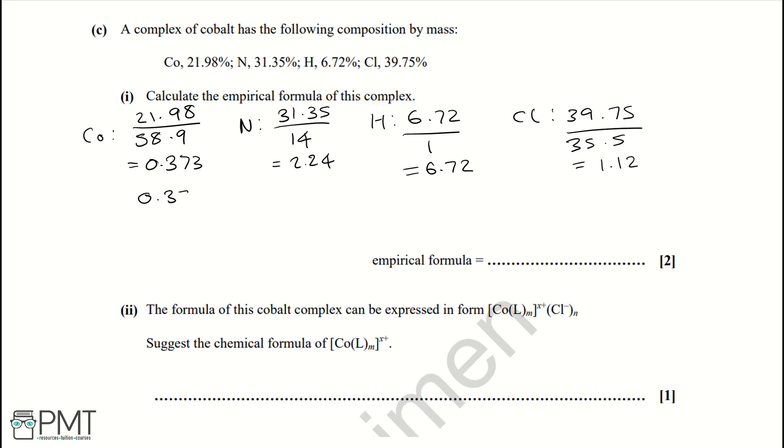Then we need to divide by the smallest, so we're going to do 0.373 divided by 0.373, that equals 1. Then we have 2.24 divided by 0.373, that gives us 6. Then we have 6.72 divided by 0.373, that gives us 18. And chlorine, 1.12 divided by 0.373, gives us 3.